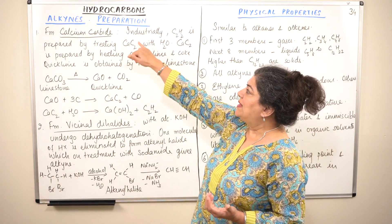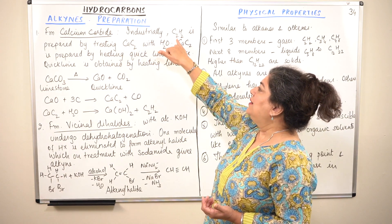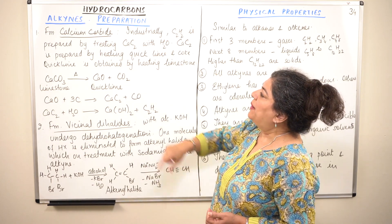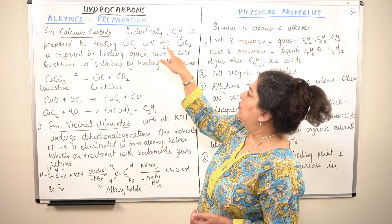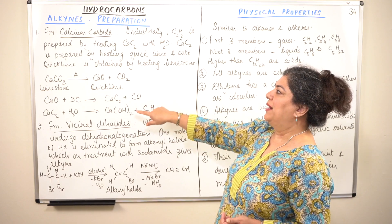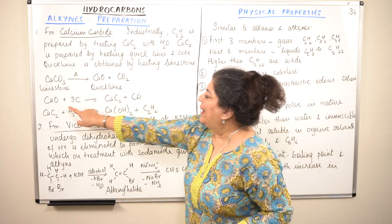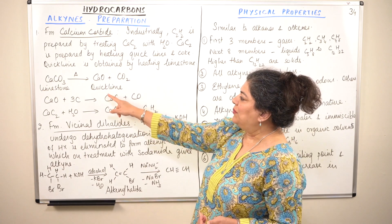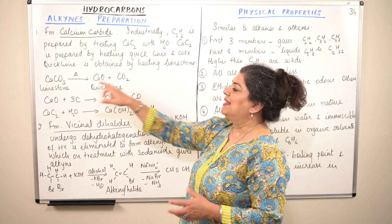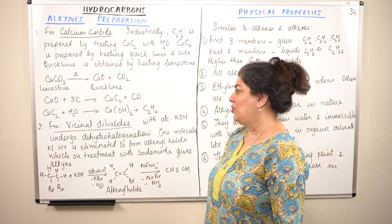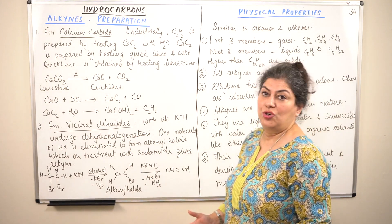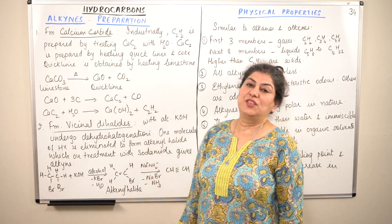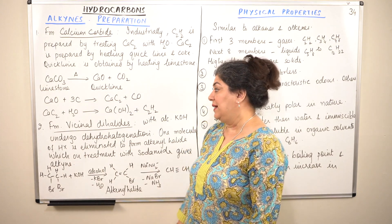Industrially, ethine is prepared by treating calcium carbide with water. This calcium carbide is prepared by heating quicklime with coke, and this quicklime is obtained by the thermal decomposition of limestone. So this was the first method of preparation of an alkyne.